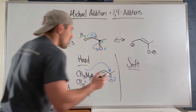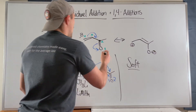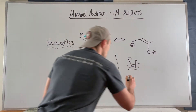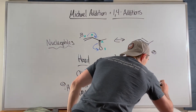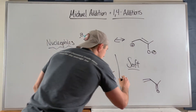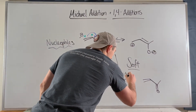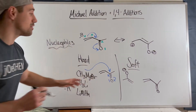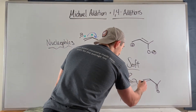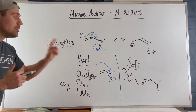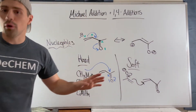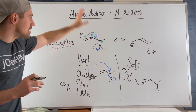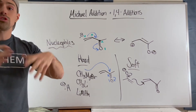Soft nucleophiles are pretty much everything else — they like to do 1,4-additions, meaning they attack the beta carbon rather than the typical carbonyl carbon. For example, enolates are not as reactive as hard nucleophiles; they're soft nucleophiles that prefer and settle for that fourth carbon. When you do a 1,4-addition specifically with an enolate, it's called a Michael addition.